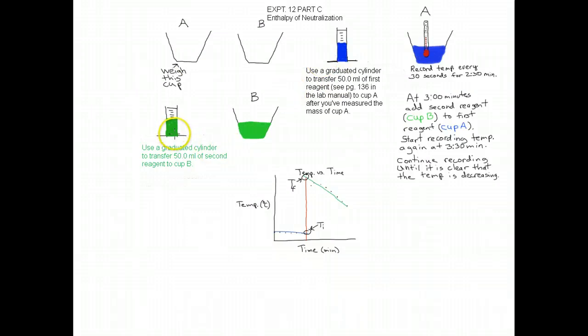Then you're going to measure 50 milliliters of the second reagent using your graduated cylinder into cup B. And for run one, that would be 2.02 molar sodium hydroxide.